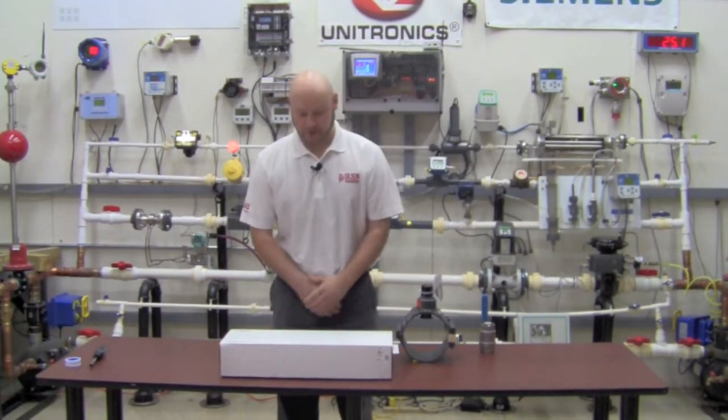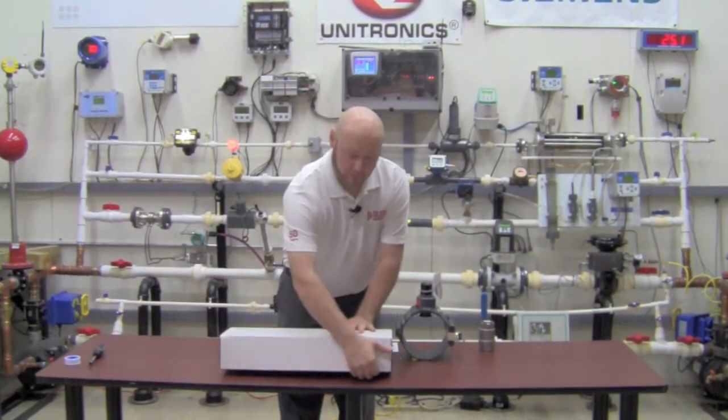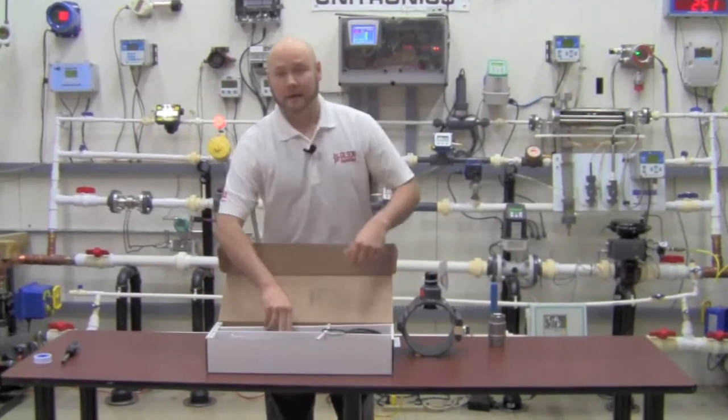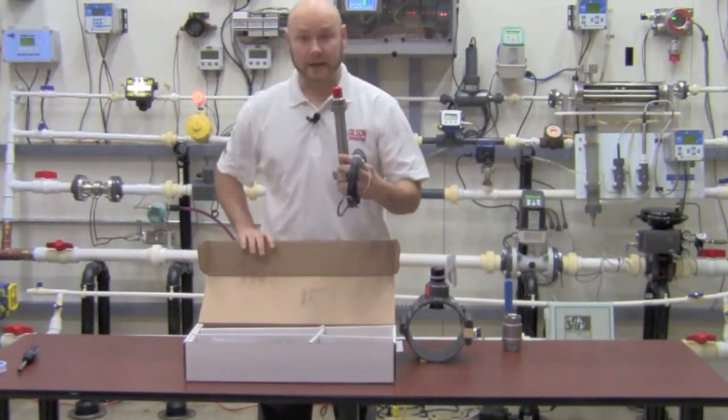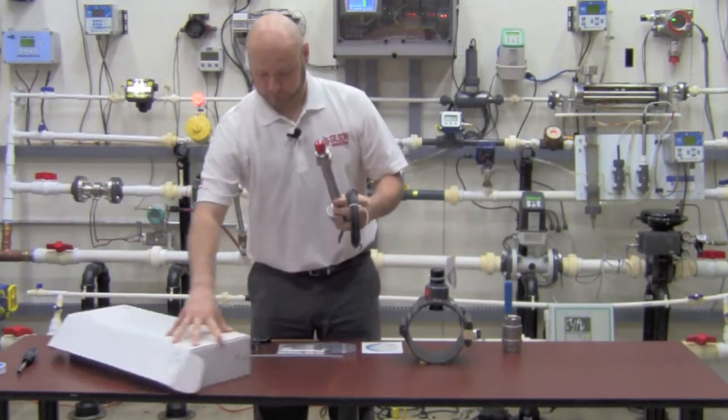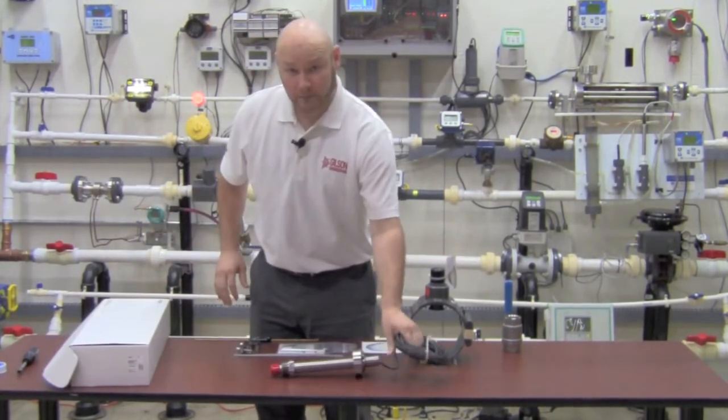When you receive your 2552, the first thing you're going to do is remove it from the box. In the box you're going to receive the meter itself with a protective cap and then a number of accessories.